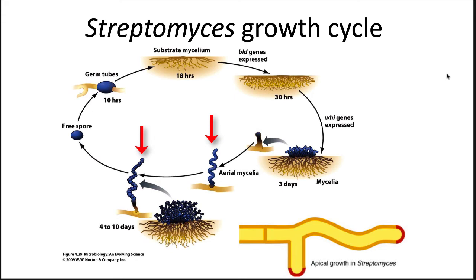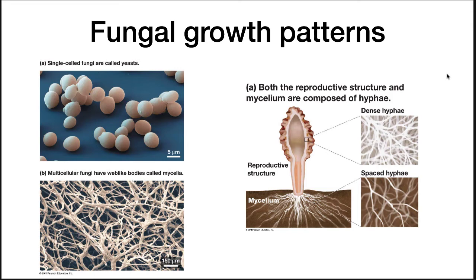Fungi also can grow by forming long filaments. However, many can also grow as single cells — these are called dimorphic fungi. When two compatible mating strains encounter one another, they can combine to form a dikaryotic state, where each cell has two nuclei. That dikaryotic state is when reproductive fungal structures form, and these are macroorganisms that we know as mushrooms, puffballs, shelf fungi, and others.